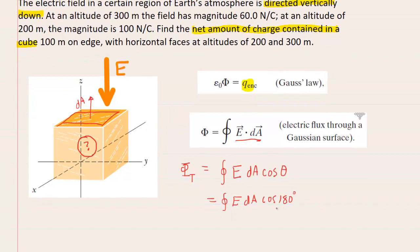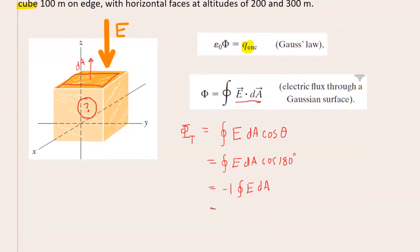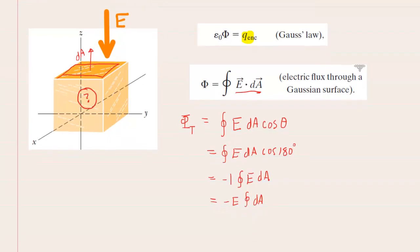So we can actually rewrite this as electric field times dA times the cosine of 180 degrees. Now of course the cosine of 180 degrees is negative 1 so we'll factor out the negative 1 and then it turns out that the electric field, because it's a constant value at the top surface, I believe it's 60 newtons per coulomb, can be factored outside the integral as well. So you're actually just left with negative E times this integral of dA. Now from basic calculus we recall that the integral of dA would just be the area. So we actually have negative EA. And again this is the flux along the top surface.